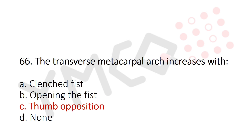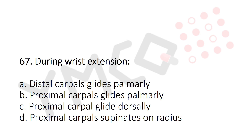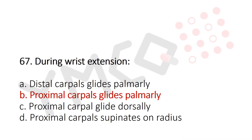Question 67: During wrist extension — Option A: distal carpal glides palmarly, Option B: proximal carpal glides palmarly, Option C: proximal carpal glides dorsally, Option D: proximal carpal supinates on radius. The answer is Option B, proximal carpal glides palmarly.